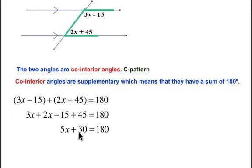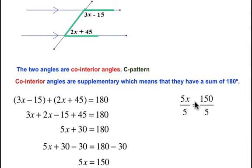Now we subtract 30 from both sides and simplify to get 5x = 150. Next, we divide both sides by 5 to isolate x, and we get x = 30 degrees.